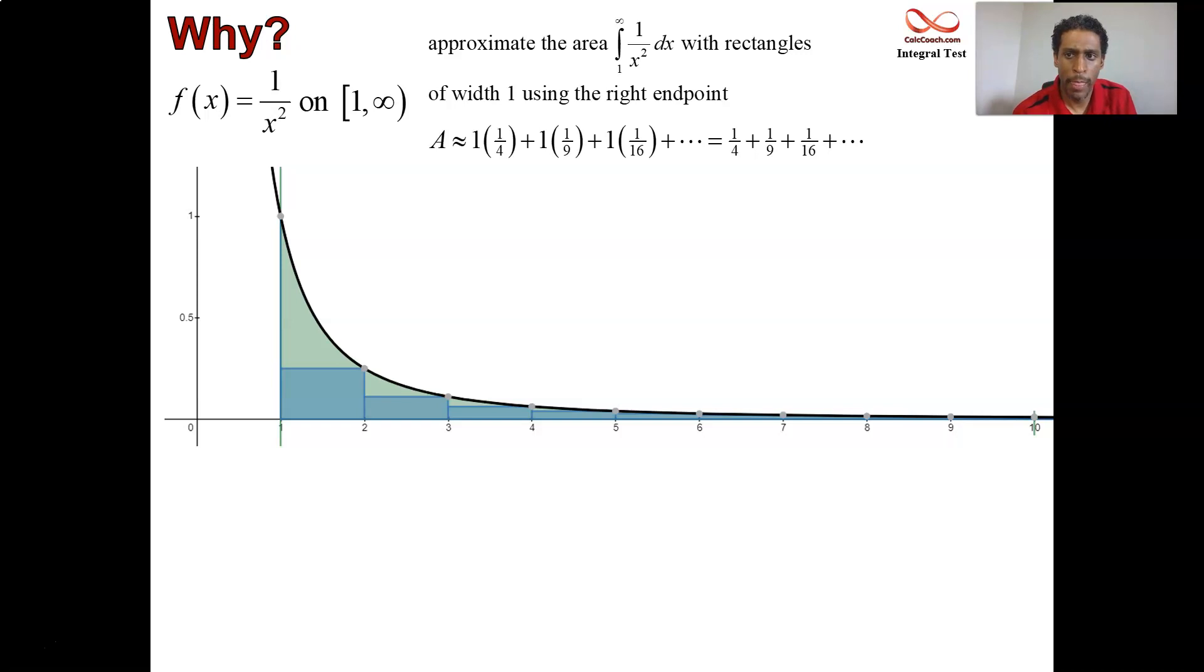And so, this is actually equal to the series of 1 over n squared, but it starts at 2, though. But for sure, we can state, though, that this is an underestimate to the area under the graph. Each one of these rectangles has less area than the area under the graph. And so, what we can say, then, is that from 2 to infinity, this summation is smaller than the area under 1 over x squared from 1 to infinity.